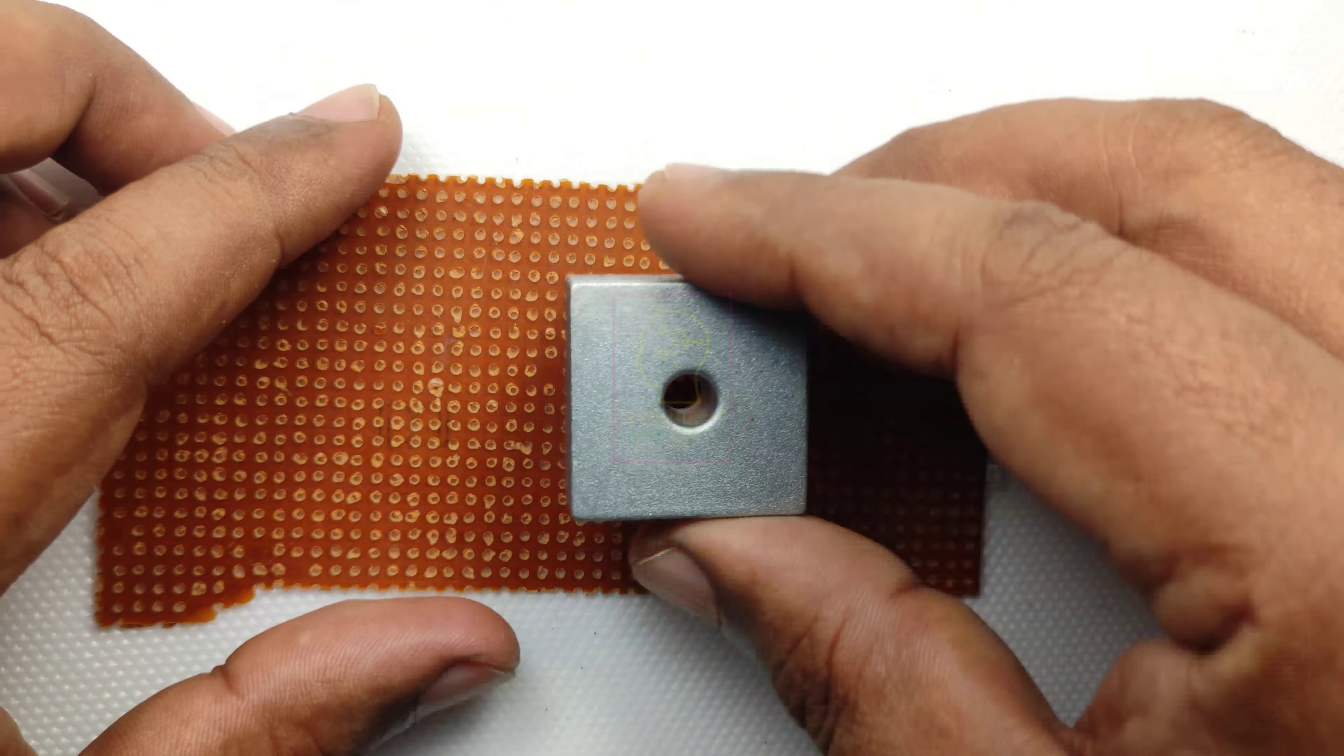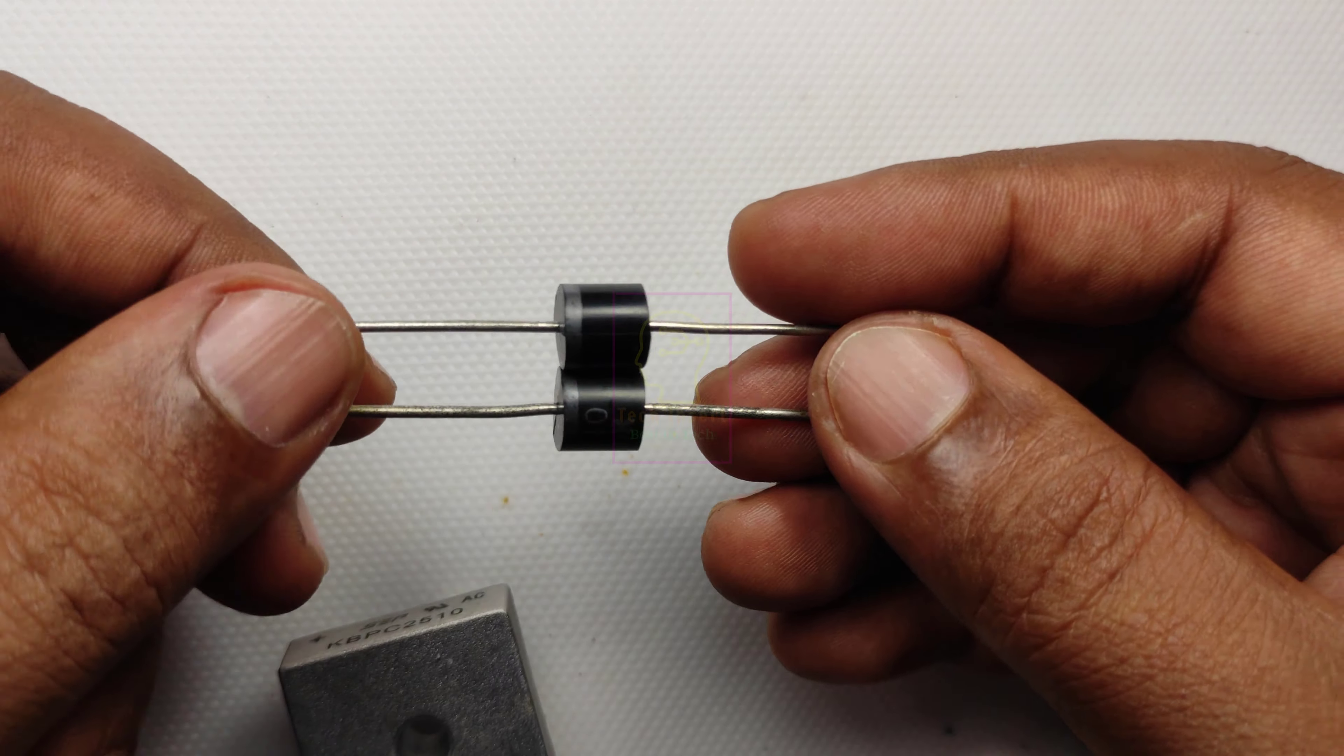In order to handle more current you need to connect two diodes in parallel so that your bridge rectifier will handle 20 amperes. So for making 20 ampere bridge rectifier you need 8 10 ampere diodes.